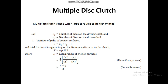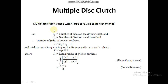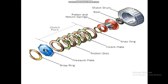For multiple disc clutches, the formula is the same — n·μ·W·r — but the value of n changes. n = n1 + n2 − 1, where n1 is the number of discs on the driving shaft and n2 on the driven shaft. For example, with five discs on the driving shaft and five on the driven shaft: 5 + 5 − 1 = 9, so n equals 9.